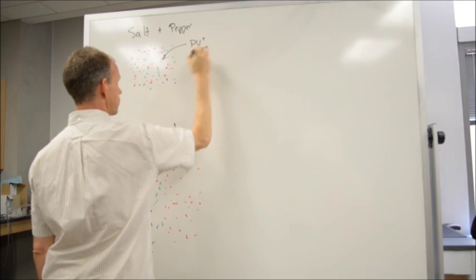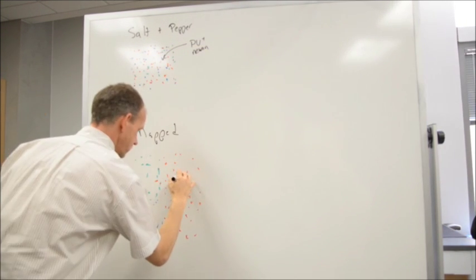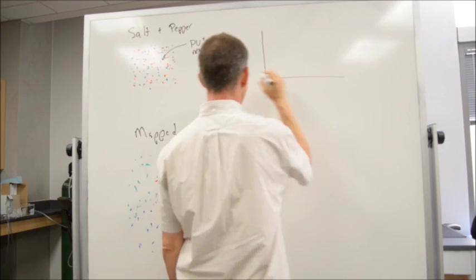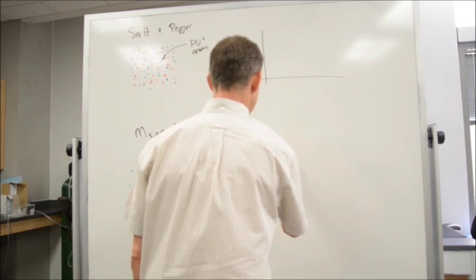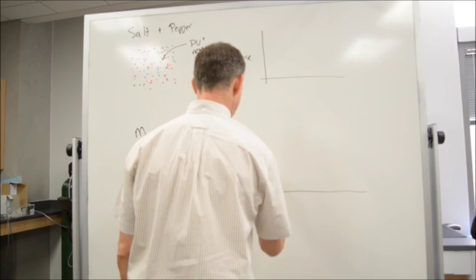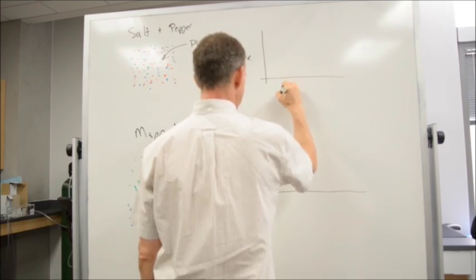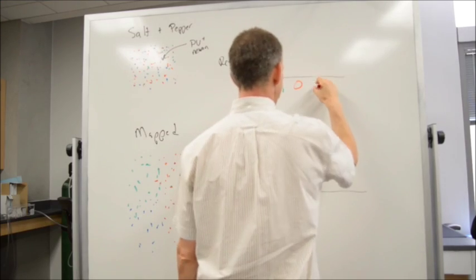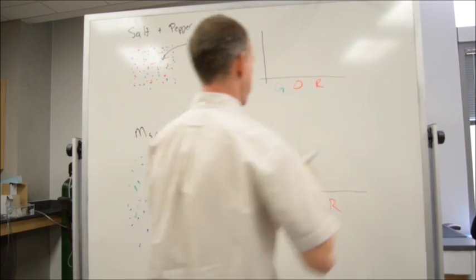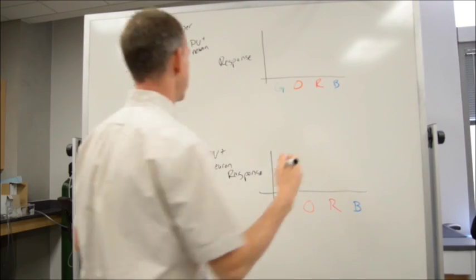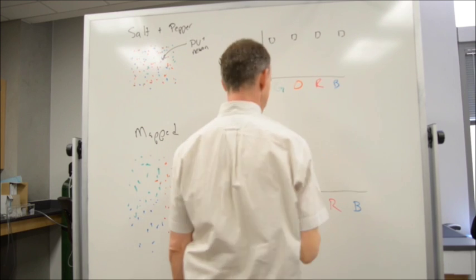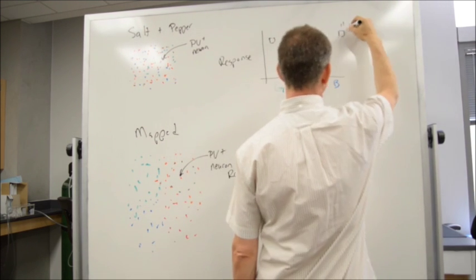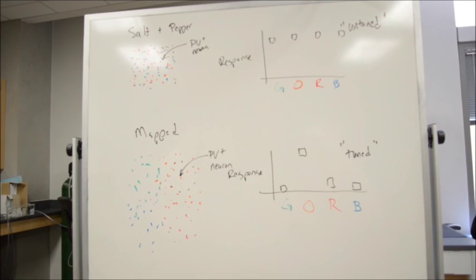In this case, in the mouse, we can see that all of this is a jumble, it's in disarray. And if we were to then imagine that there was a parvalbumin-positive inhibitory neuron that was simply integrating the inputs within this local neighborhood, it would actually respond to all of these different features. There's a green cell within here, there's an orange cell, a red, and a blue cell. So it actually wouldn't be what we would call a tuned cell or a selective cell, we would call it an untuned cell, because it's integrating the inputs from its local neighborhood, and that local neighborhood is diverse.